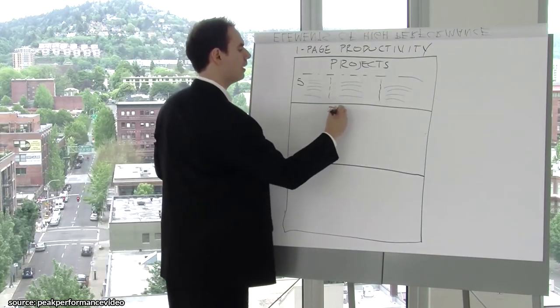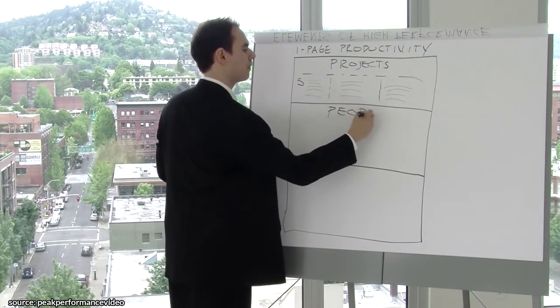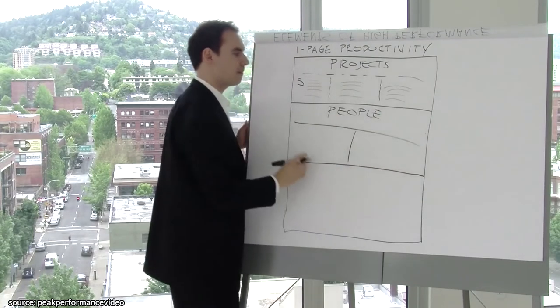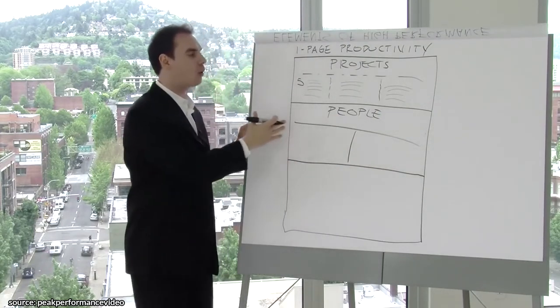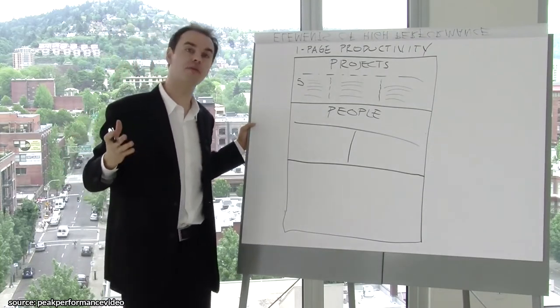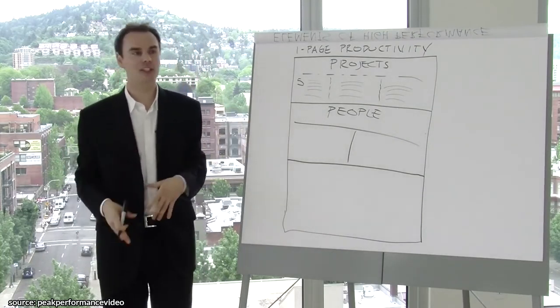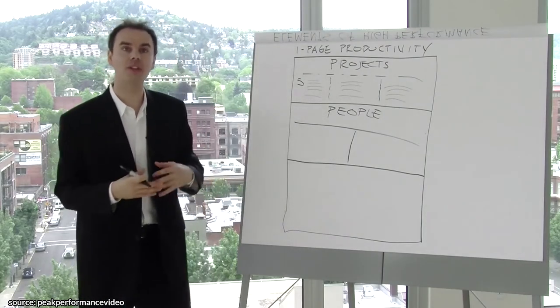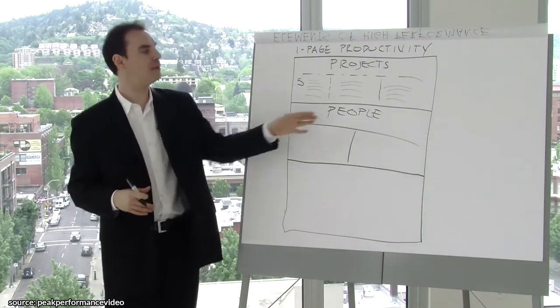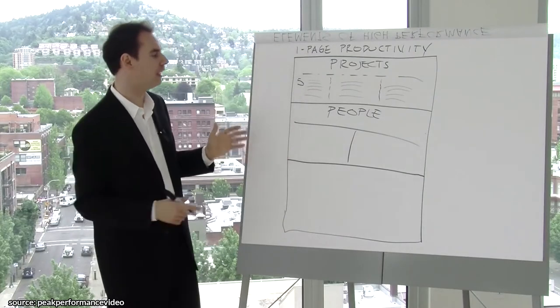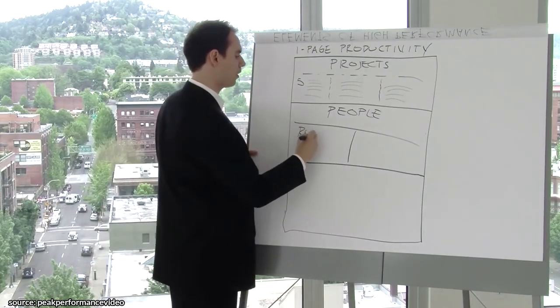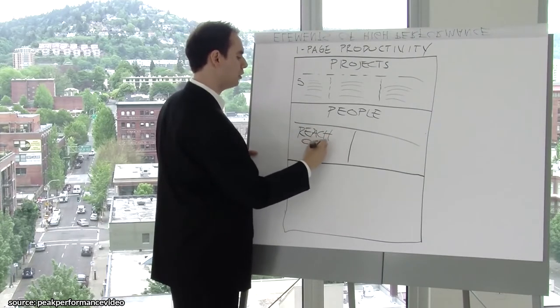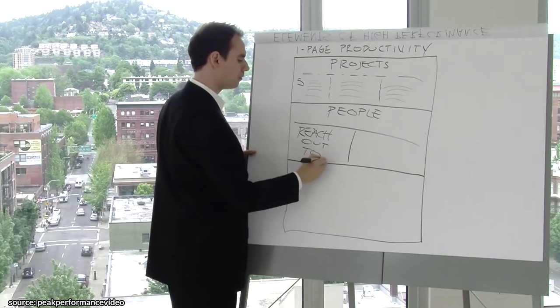Next is the people category. In this people category, I want you to think of two things. The people category is really important for high performers because high performers really get ahead not just because of who they know but how they're engaging who they know—what they're asking for, what they're doing. I want you to think of two categories.